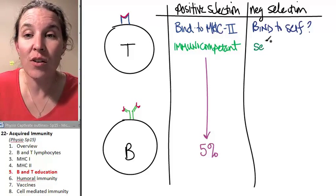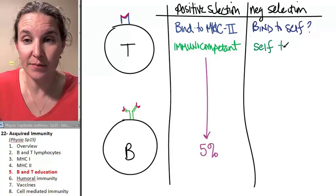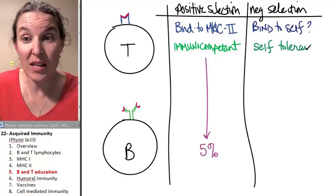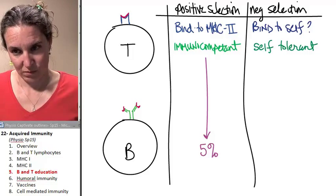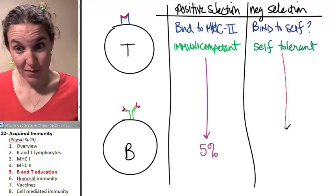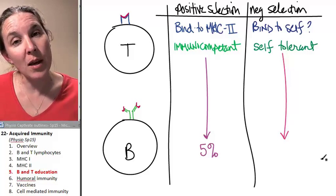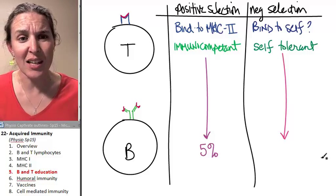If you pass the negative selection test, you are self-tolerant. Both of these things are good. I've got more bad news. Be grateful that you are not a baby lymphocyte heading off to school.